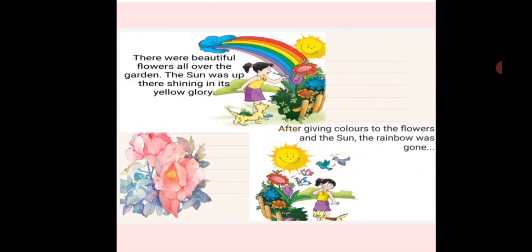There were beautiful flowers all over the garden. The Sun was up there shining in its yellow glory, and the yellow color she had left for the bright Sun. After giving colors to the flowers and the Sun, the rainbow was gone.